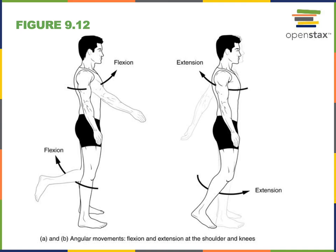Another example of flexion and extension is motion at the tibiofemoral joint, commonly referred to as the knee joint. Flexion of the tibia at the tibiofemoral joint starts from anatomical position and lifts the tibia posteriorly and superiorly. Then extension returns the tibia back to anatomical position.